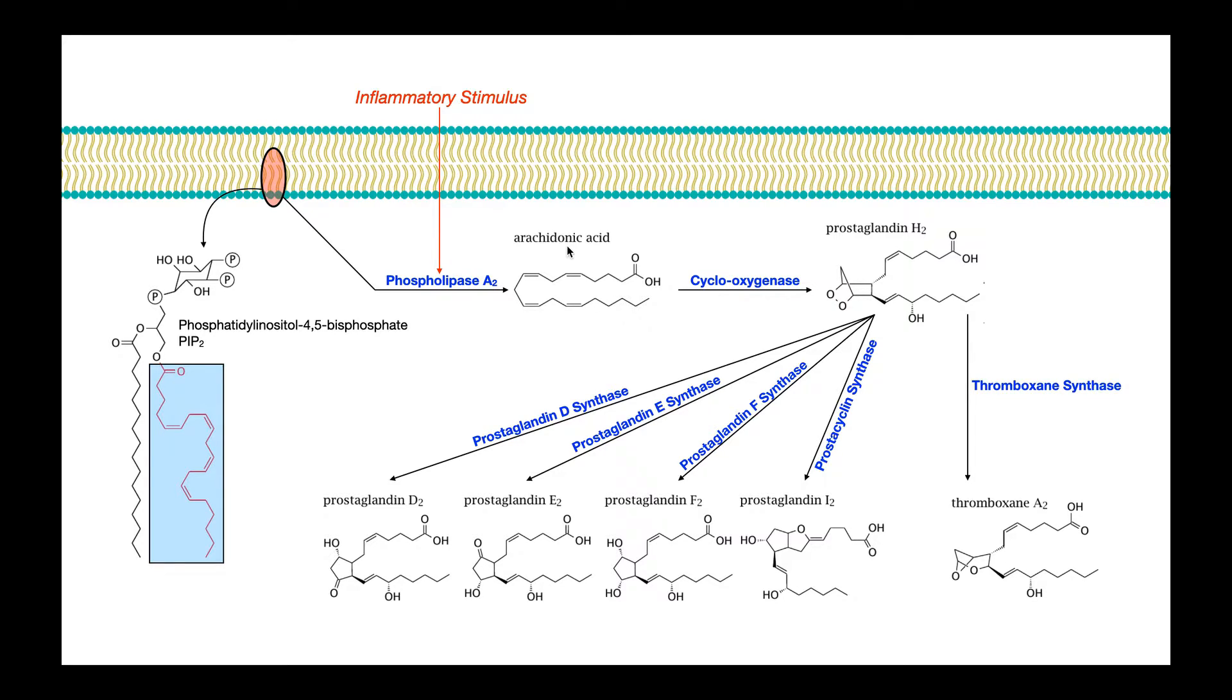Now in general, arachidonic acid can be transformed into a variety of compounds, each of which falls into one of three categories. The largest category are the prostaglandins, the second are the thromboxanes, and third, which will be the next video, are the leukotrienes.